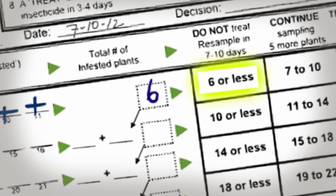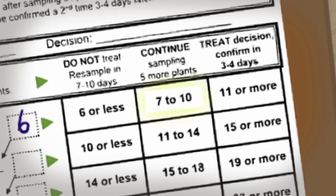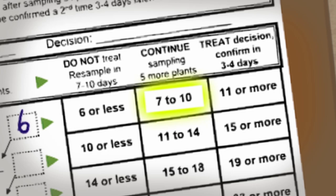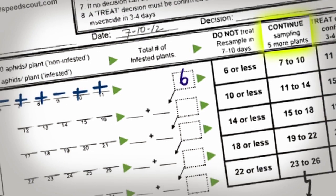6 or less pluses, re-sample in 7 to 10 days. Now, if 7 to 10 infested plants are counted, continue sampling 5 more plants and use the new total number of plants to make a decision.